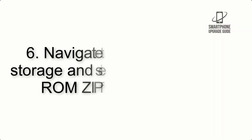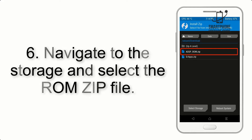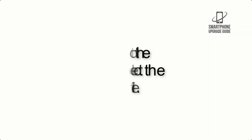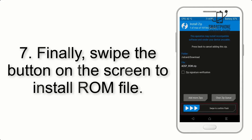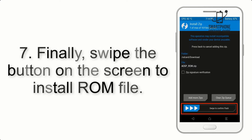Step 6: Navigate to the storage and select the ROM zip file. Step 7: Finally, swipe the button on the screen to install the ROM file.